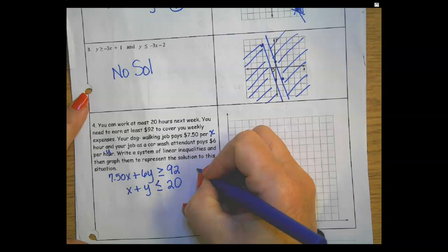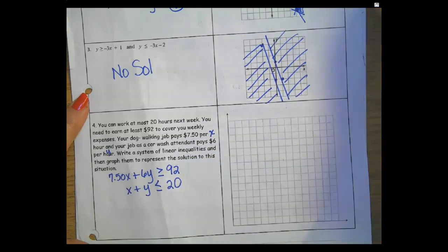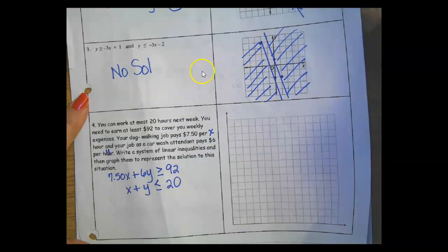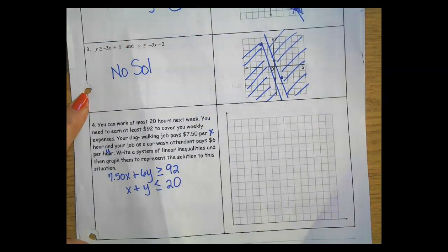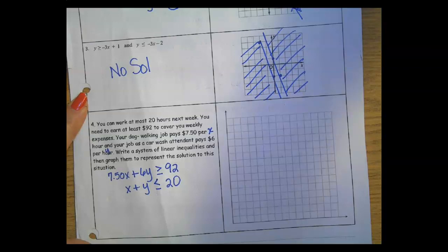Let me do the other one. The next one is x plus y is less than or equal to 20.